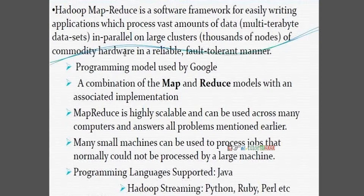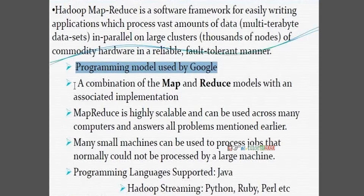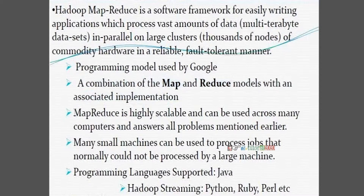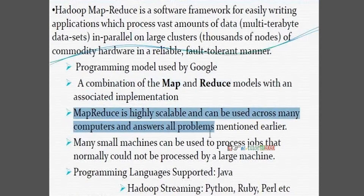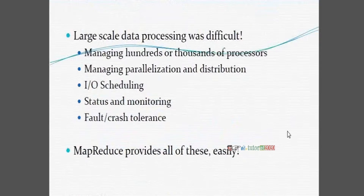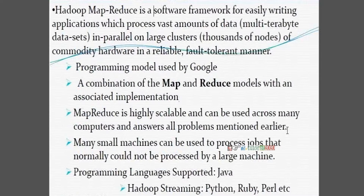Basically, this MapReduce framework was inspired by Google. Google guys were first working parallelly using a combination of mapping and reducing models with an associated implementation — we call it a MapReduce application. MapReduce is highly scalable and can be used across many computers, answering all the problems mentioned earlier: parallel processing, processors, I/O scheduling, status and monitoring — all these problems we can resolve using the mapping concept.